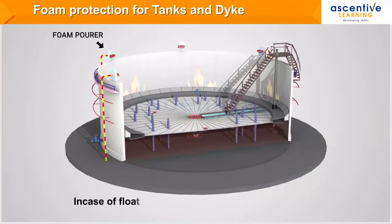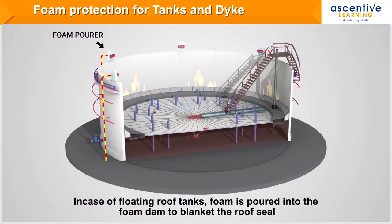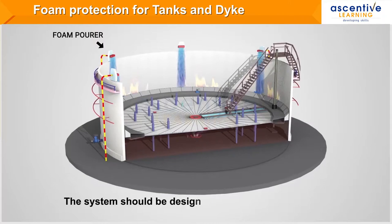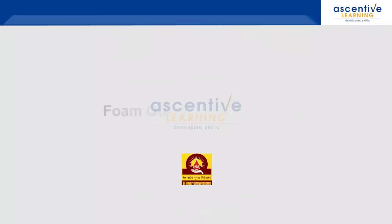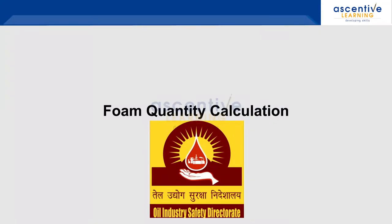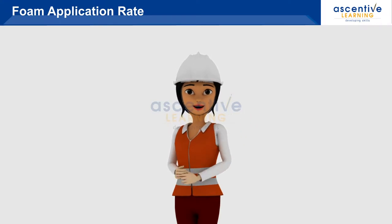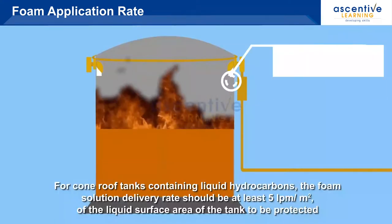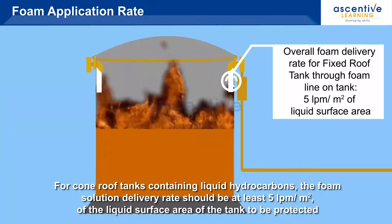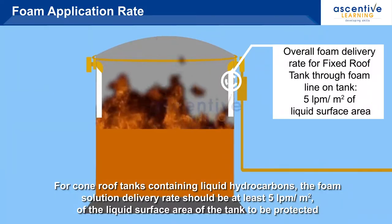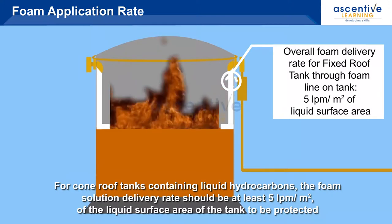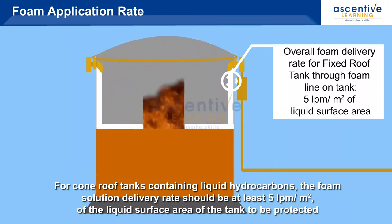In case of floating roof tanks, foam is poured into the foam dam to blanket the roof seal. The system should be designed to create a foam blanket on the burning surface in a reasonably short period. For cone roof tanks containing liquid hydrocarbons, the foam solution delivery rate should be at least 5 liters per minute per square meter of the liquid surface area of the tank to be protected.